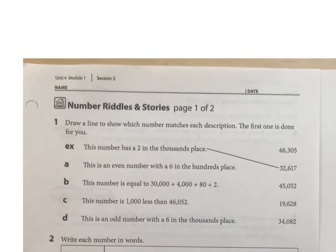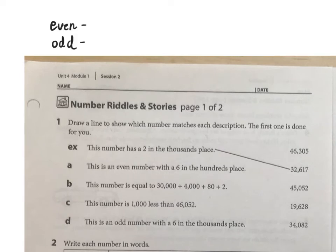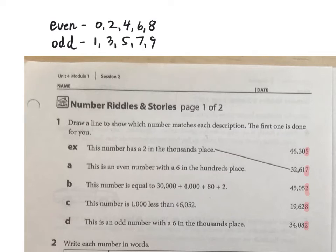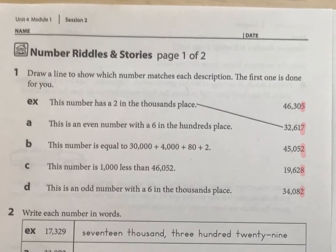Let's quickly review even and odd numbers. We are always going to be looking in the ones place to figure out if a number is even or odd. In the ones place, even numbers are 0, 2, 4, 6, and 8. Odd numbers, on the other hand, are 1, 3, 5, 7, and 9. That should help us out with some of these problems coming up.